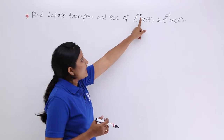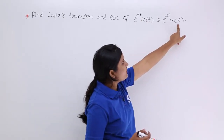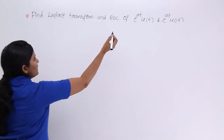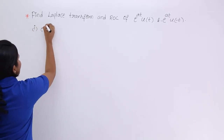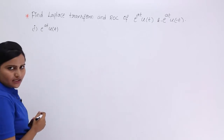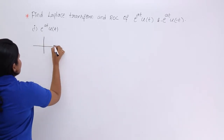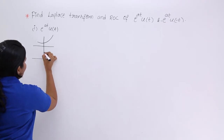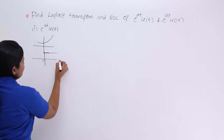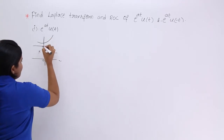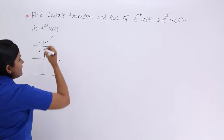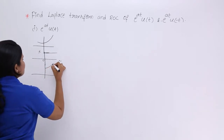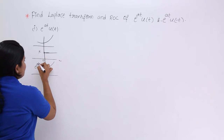In the right region, the signal is e^(at) multiplied with u(t); in the left region it is e^(at) multiplied with u(-t). First, let's trace the signal. e^(at) is a rising exponential — it rises from minus infinity to infinity. Multiplied by u(t), which equals 1 from 0 to infinity, you get the rising part of the rising exponential. So this is e^(at)u(t).